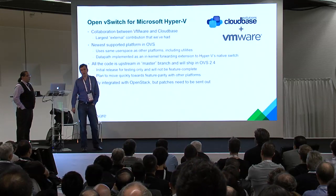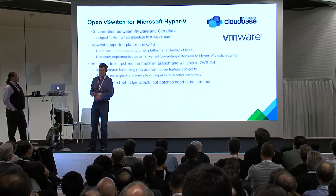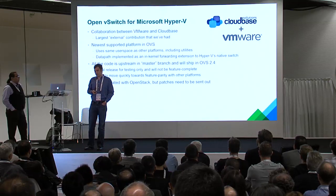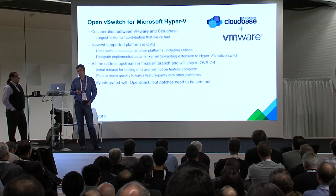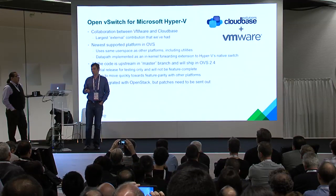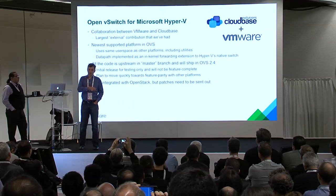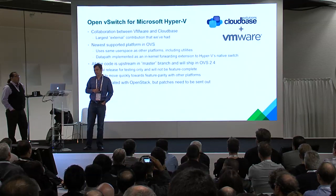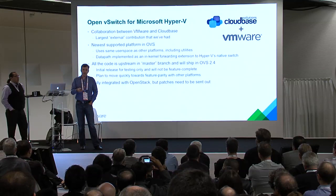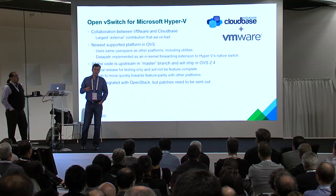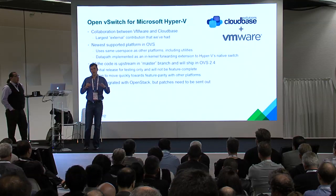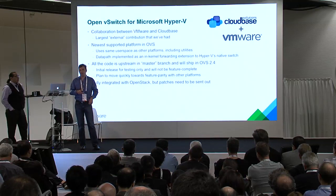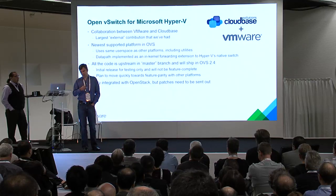I want to talk about our port of Open vSwitch to Hyper-V. This is a collaboration between VMware and CloudBase, and it's the largest external contribution we've had. The reason it's really external from both is that the core OVS developers were more Linux people than Windows. The group that implemented OVS support for Hyper-V in VMware was a different group from the core OVS developers. VMware and CloudBase had each developed their own port to Hyper-V, and so we decided to merge the efforts together.